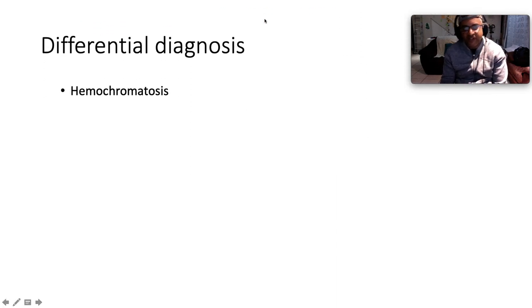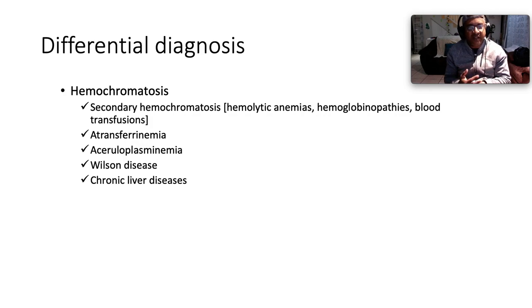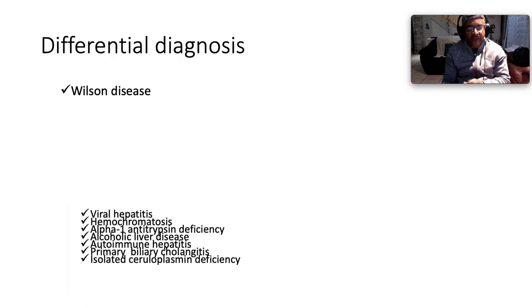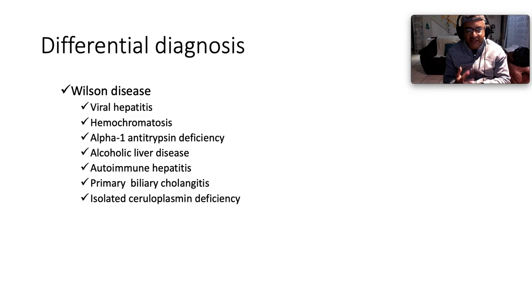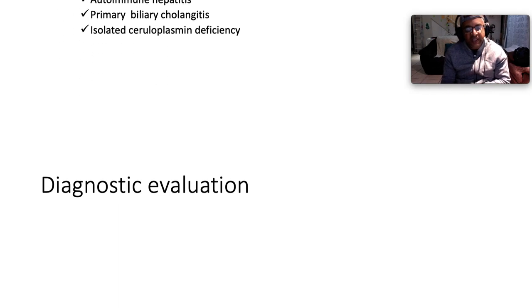The differential diagnosis for hemochromatosis includes secondary hemochromatosis due to hemolytic anemia, hemoglobinopathies, blood transfusions, atransferrinemia, aceruloplasminemia, Wilson disease, and chronic liver disease. The differential for Wilson disease includes viral hepatitis, hemochromatosis, alpha-1 antitrypsin deficiency, alcoholic liver disease, autoimmune hepatitis, primary biliary cholangitis, and isolated ceruloplasmin deficiency — most of which can cause cirrhosis in their own right.